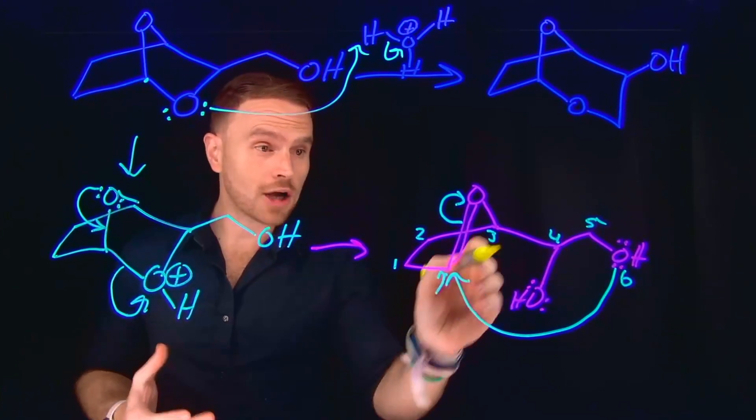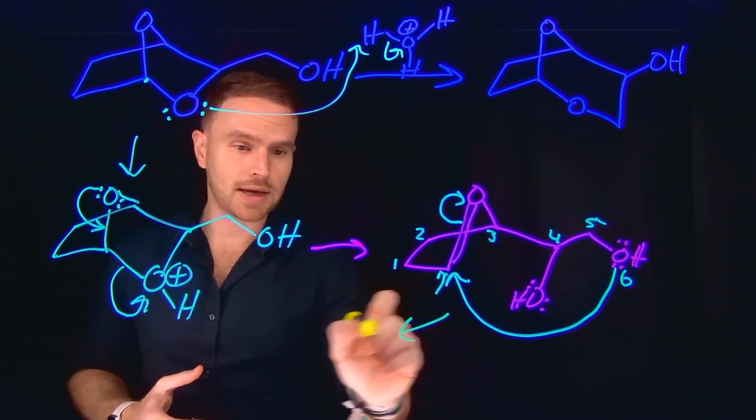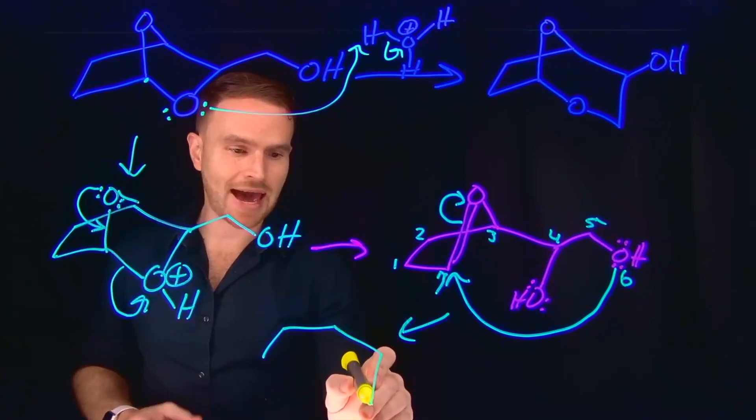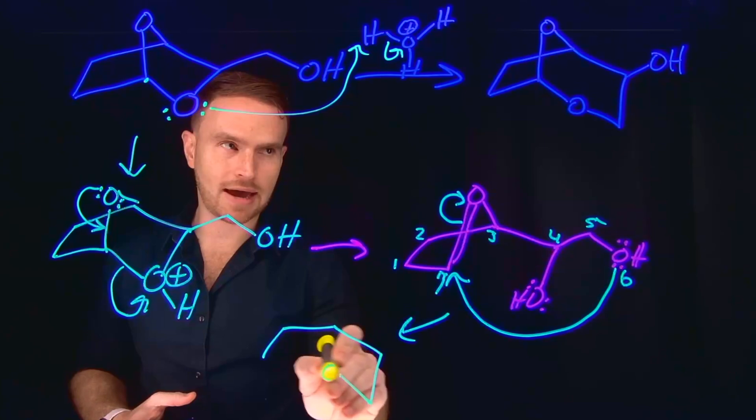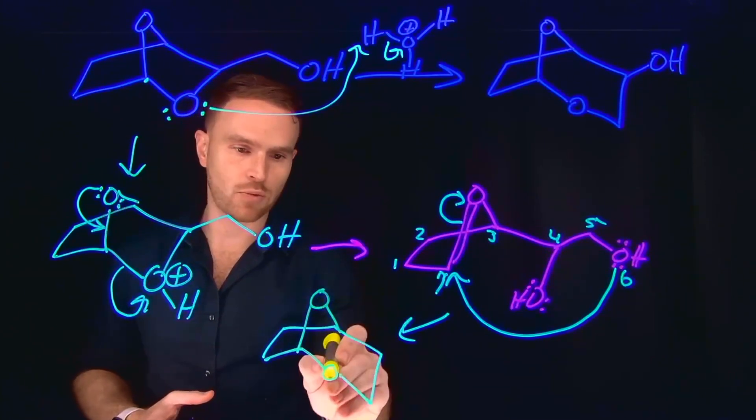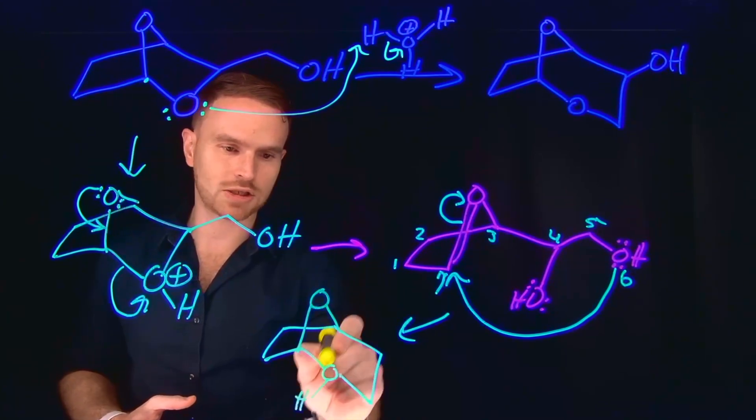So now that we have elongated that ring, what we have is a situation where now we have that piece where we've added that methyl group, and now we have our oxygen here, which is going to allow us to form that seven-membered ring, except remember this is still going to be protonated.